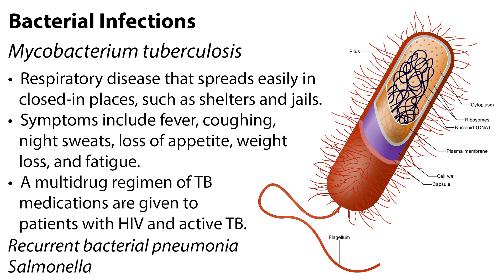Mycobacterium tuberculosis is another common bacterial infection. This respiratory disease spreads easily in closed-in places, such as shelters and jails. Symptoms include fever, coughing, night sweats, loss of appetite, weight loss, and fatigue. A multidrug regimen of TB medications is given to patients with HIV and active TB. Other common bacterial infections include recurrent bacterial pneumonia and salmonella.